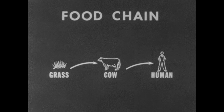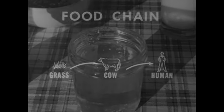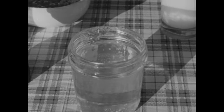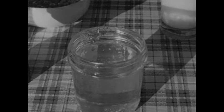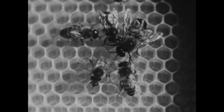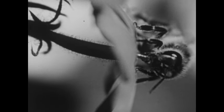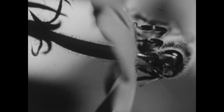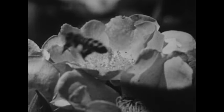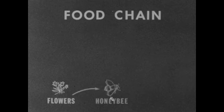A somewhat different chain might be traced to the honey in this jar. The honey which we eat is produced by honey bees. To produce this food, which they also need to live and grow, the bees collect nectar from flowering plants. So we might represent this particular food chain as: flowers, honey bees, human.